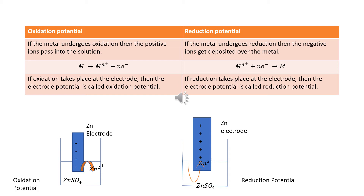What is oxidation potential? If the metal undergoes oxidation, then positive ions go into the solution. For example, if we dip a zinc rod in zinc sulfate solution, the zinc rod will oxidize and liberate Zn²⁺ ions into the solution — that is oxidation potential. If oxidation takes place at the electrode, then the electrode potential is called oxidation potential. For example, a metal M liberates electrons to form Mⁿ⁺ ions in solution: M → Mⁿ⁺ + n electrons.